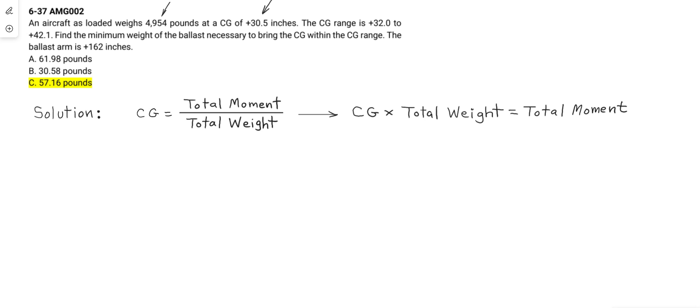Minimum positive 32.0 to positive 42.1. We use these two pieces of information to compute the original moment as is.